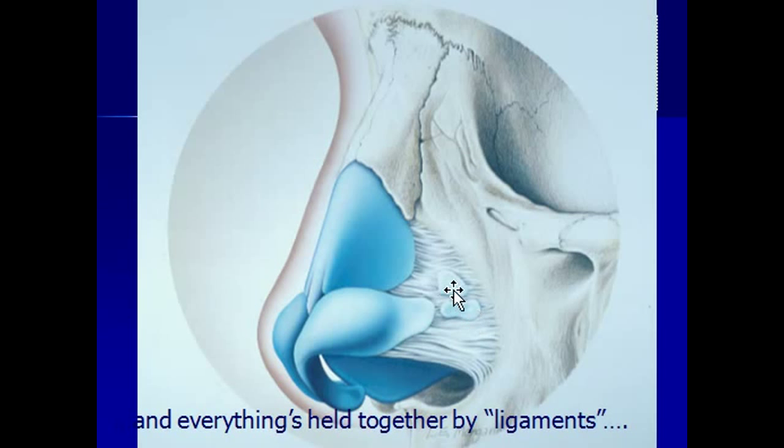Everything here shown is held together by these ligamentous attachments, and these attachments are important to maintain a connection between these more flexible cartilaginous structures to the stronger structures of the nasal bones and the nasal septum.